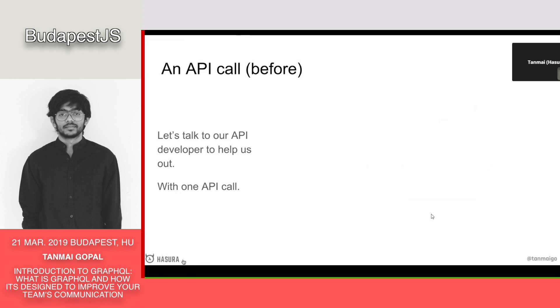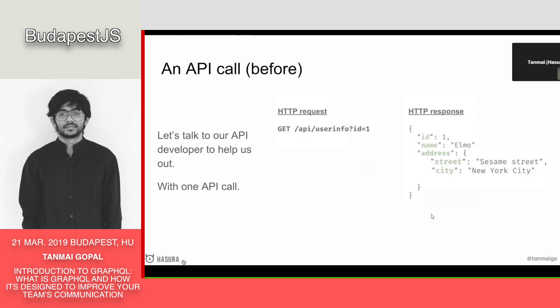The front-end team has to convince the back-end team that it's important — the experience is terrible otherwise. Then maybe a few weeks later, you get an API endpoint that has all the data unified into one point. So you get GET /api/user-info?id=1, and now you get all that information in one JSON. This is great, and it works great until you realize you're building both a web experience and a mobile experience.